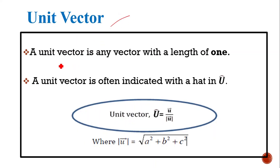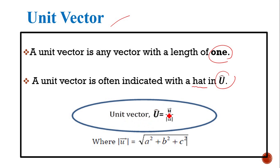A unit vector is any vector with a length of 1. A unit vector is often indicated with a hat, like this. This is the formula for unit vector, where the unit vector for u is equal to vector u divided by the magnitude of vector u. The formula for the magnitude of vector u can be written like this.